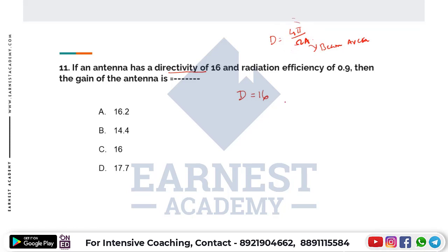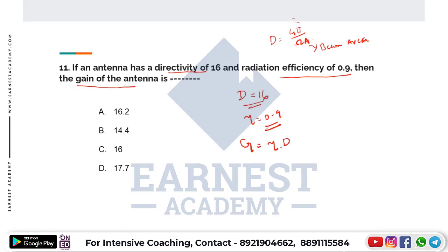Directivity is a dimensionless quantity. Here the directivity is 16. The radiation efficiency is 0.9. The gain of an antenna is equal to efficiency multiplied by directivity.